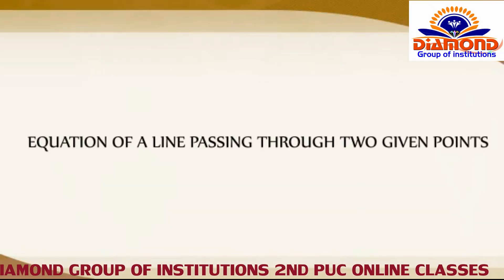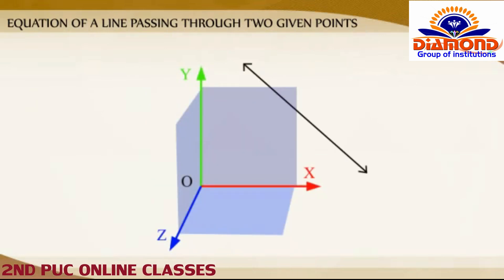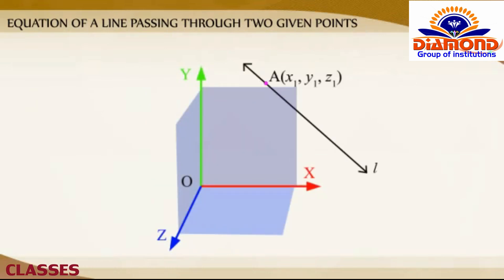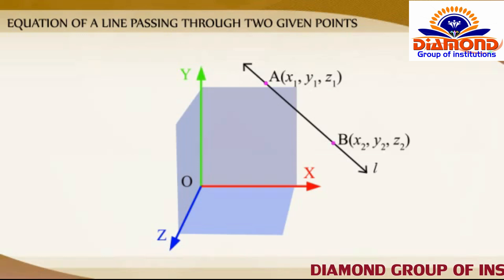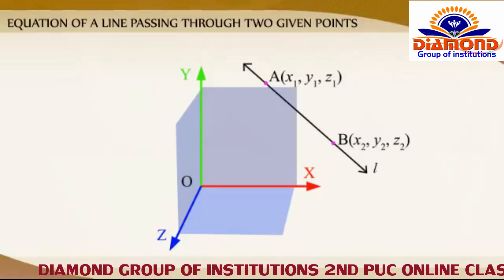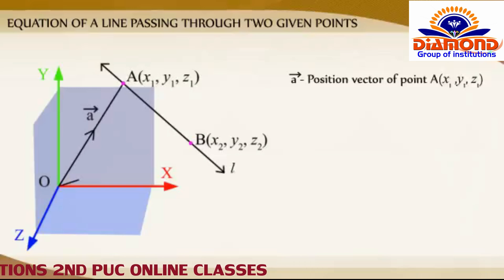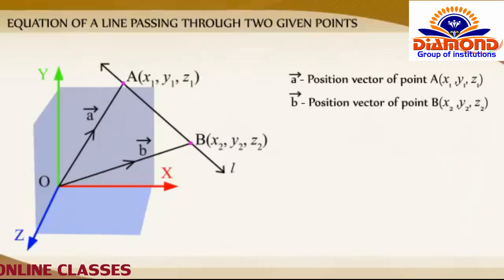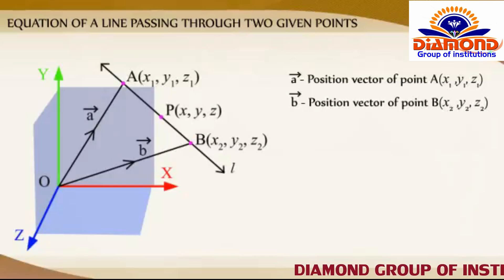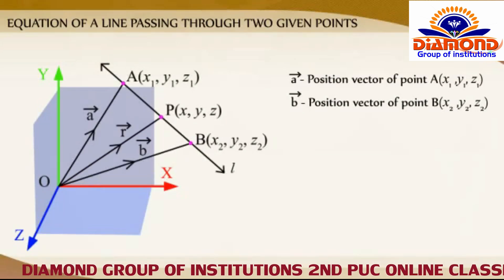Equation of a line passing through two given points. Let A and B be two points on the line L. Let A vector and B vector be the position vectors of the points A and B respectively. Let P be any arbitrary point on the line with position vector R.